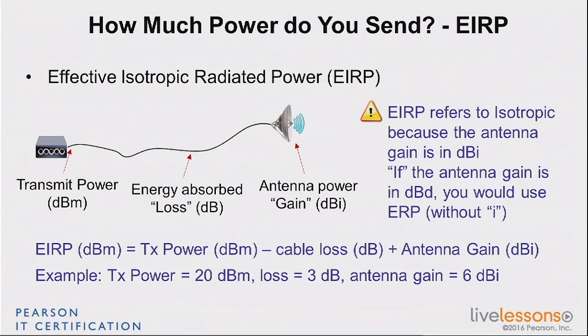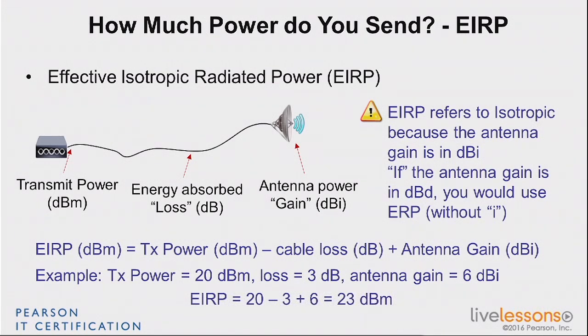Let's take an example. You have a transmit power of 20 dBm, you go through a cable that loses 3 dB, and your antenna gain is 6 dBi. What is the EIRP? If you do the math: transmit power 20 dBm, minus the cable loss of 3 dB, plus the antenna gain of 6 dBi — the result is 23 dBm. The EIRP is measured in dBm. That sounds strange because the cable loss and antenna gain are not in dBm, but that's how EIRP is measured. Being able to understand and calculate the EIRP is critical to your professional skills — make sure you master this.